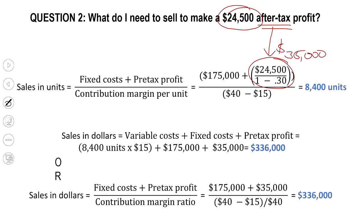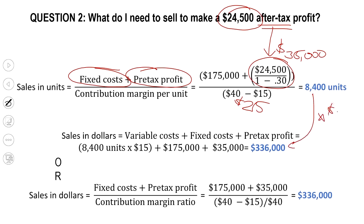So if I can come up with $35,000 pre-tax, the IRS will very happily take their $10,500, and I'll keep the rest — $24,500. I still have to cover my fixed costs, and then I have to make sure I generate enough to create that pre-tax profit. The bottom is the same though: every item I sell is still giving me $25. So if I have $175,000 in fixed costs and I now want to create $35,000 in pre-tax profits, and I still get $25 for each unit, my new target is 8,400 units. And once again, I take that number times the $40 sales price to get $336,000. To create a $24,500 after-tax profit, I need $336,000 of sales revenue.